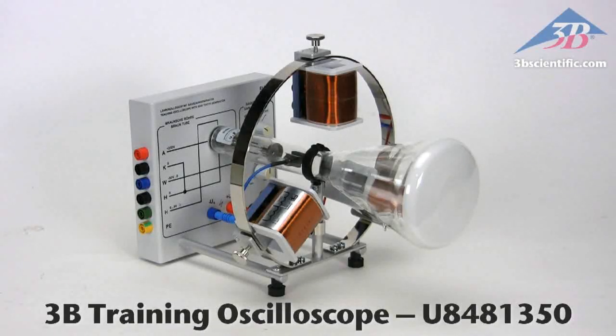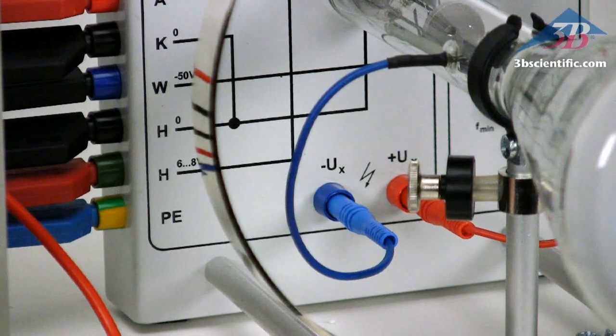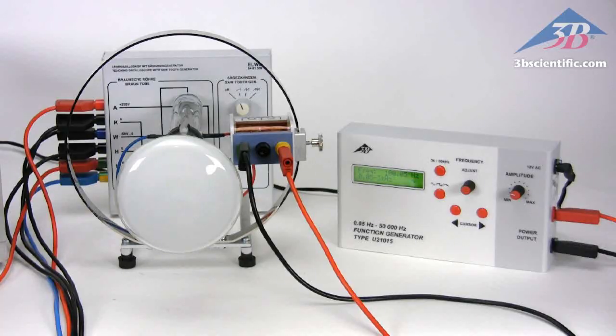The Training Oscilloscope, item number U8481350 from 3B Scientific, offers a great tutorial on the physics of electron beams and analog oscilloscopes.